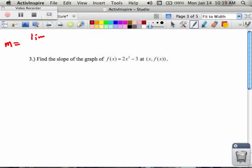So f prime equals the limit as h approaches zero of f of x plus h minus f of x all over h. I write this down all the time so I don't forget.